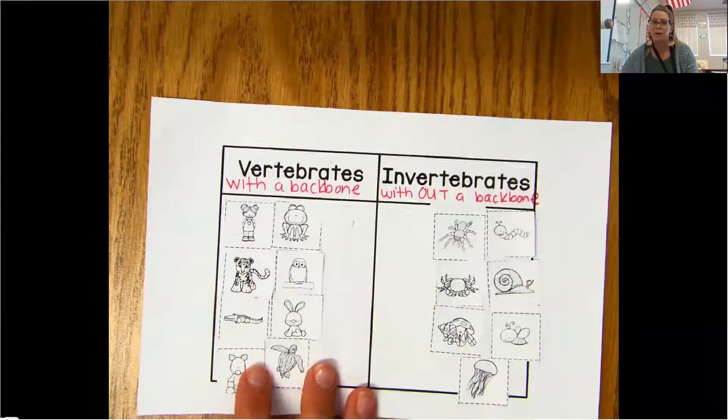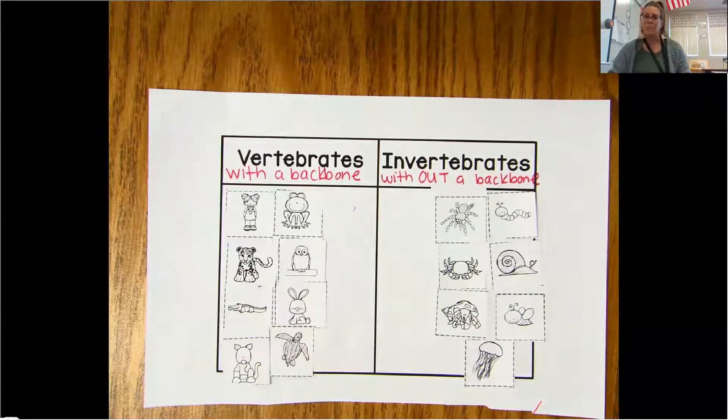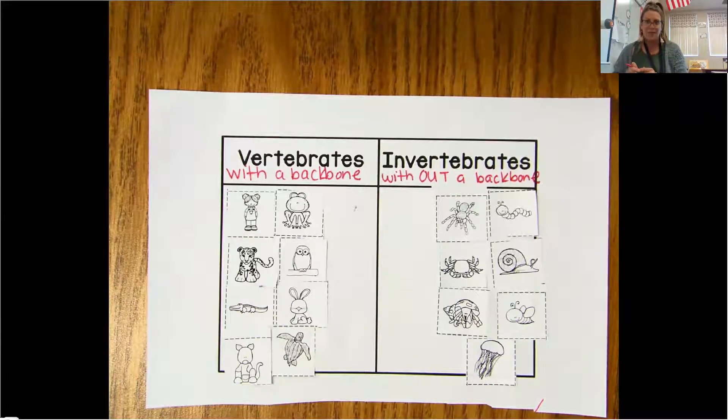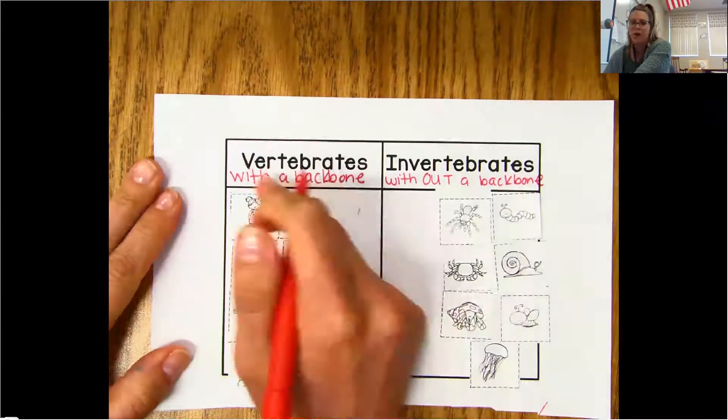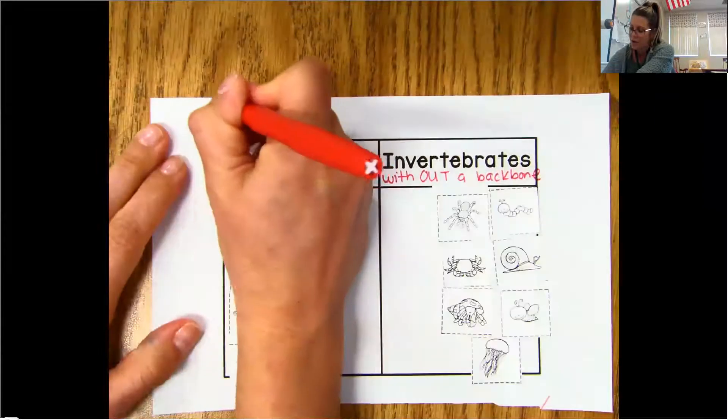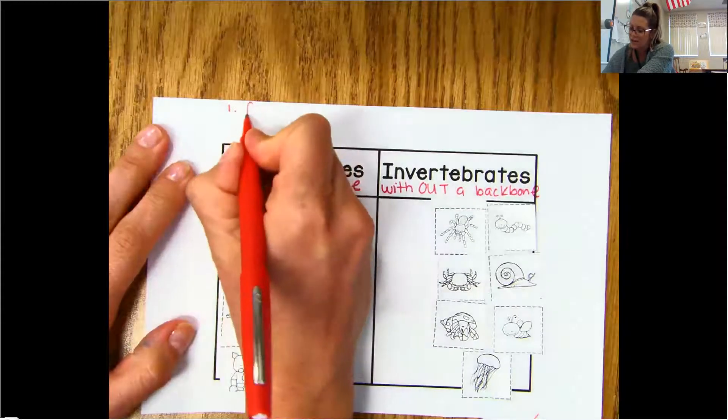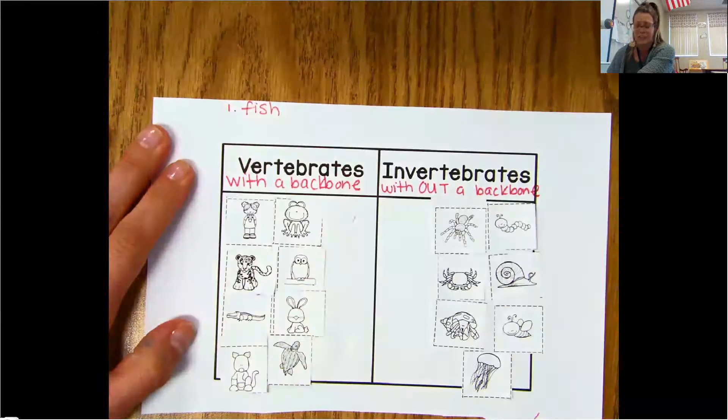While I'm doing that, I want you to think about all of the different groups or classes we talked about with vertebrates. What I noticed isn't on here. What's the one that isn't on here? For our vertebrates, remember we talked about five different groups or classes. The one that's not on here is what? It's the fish.